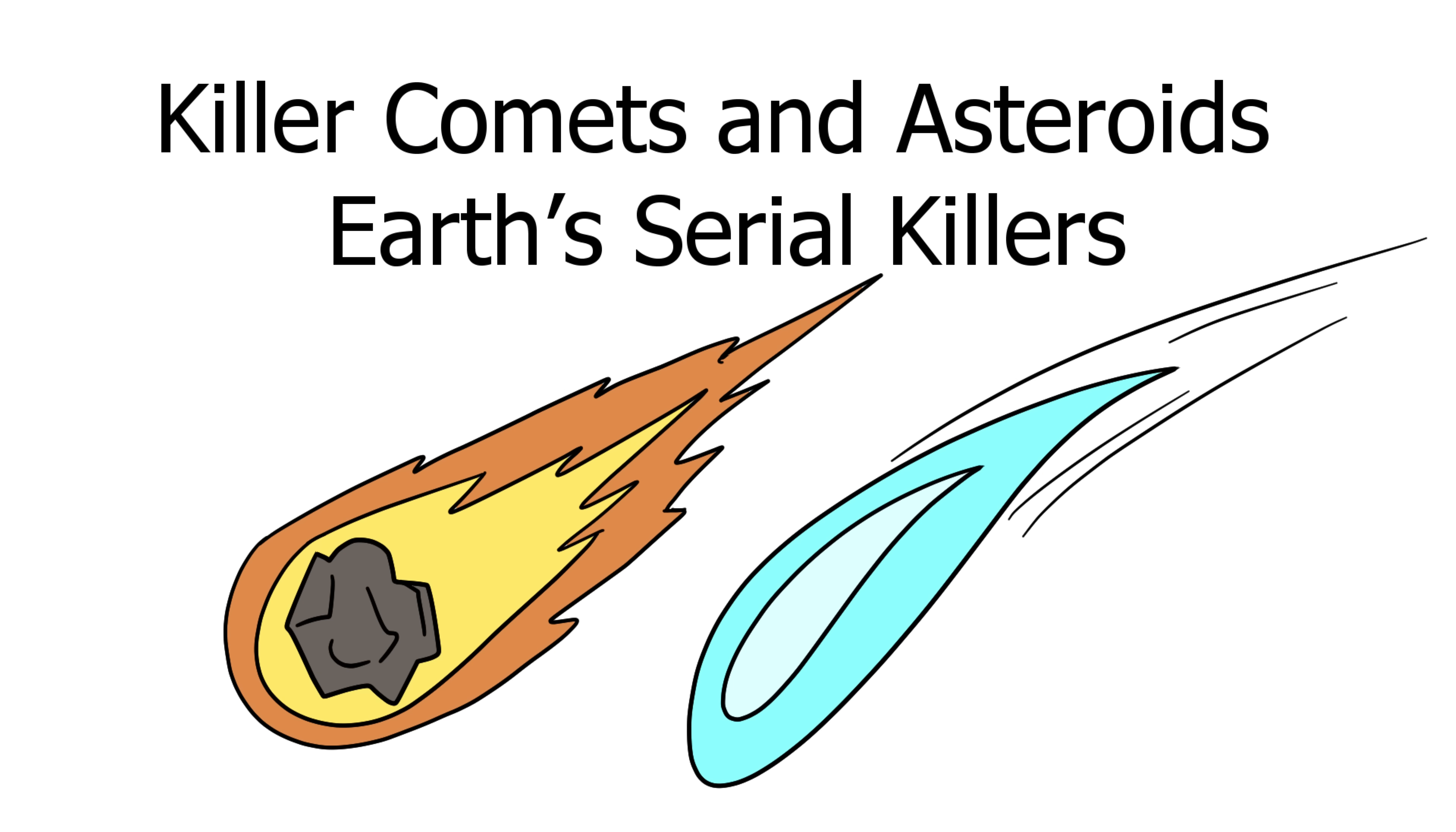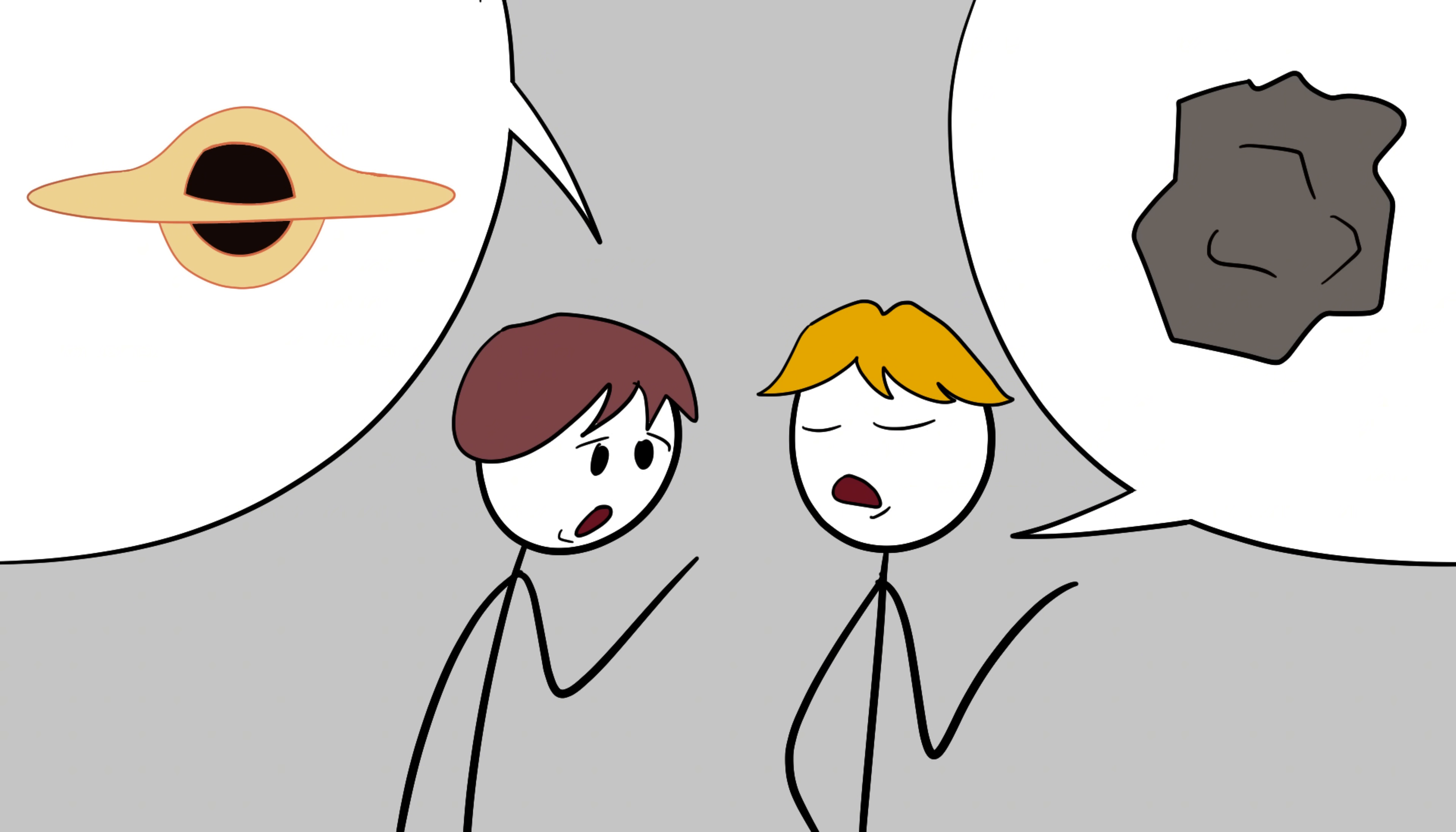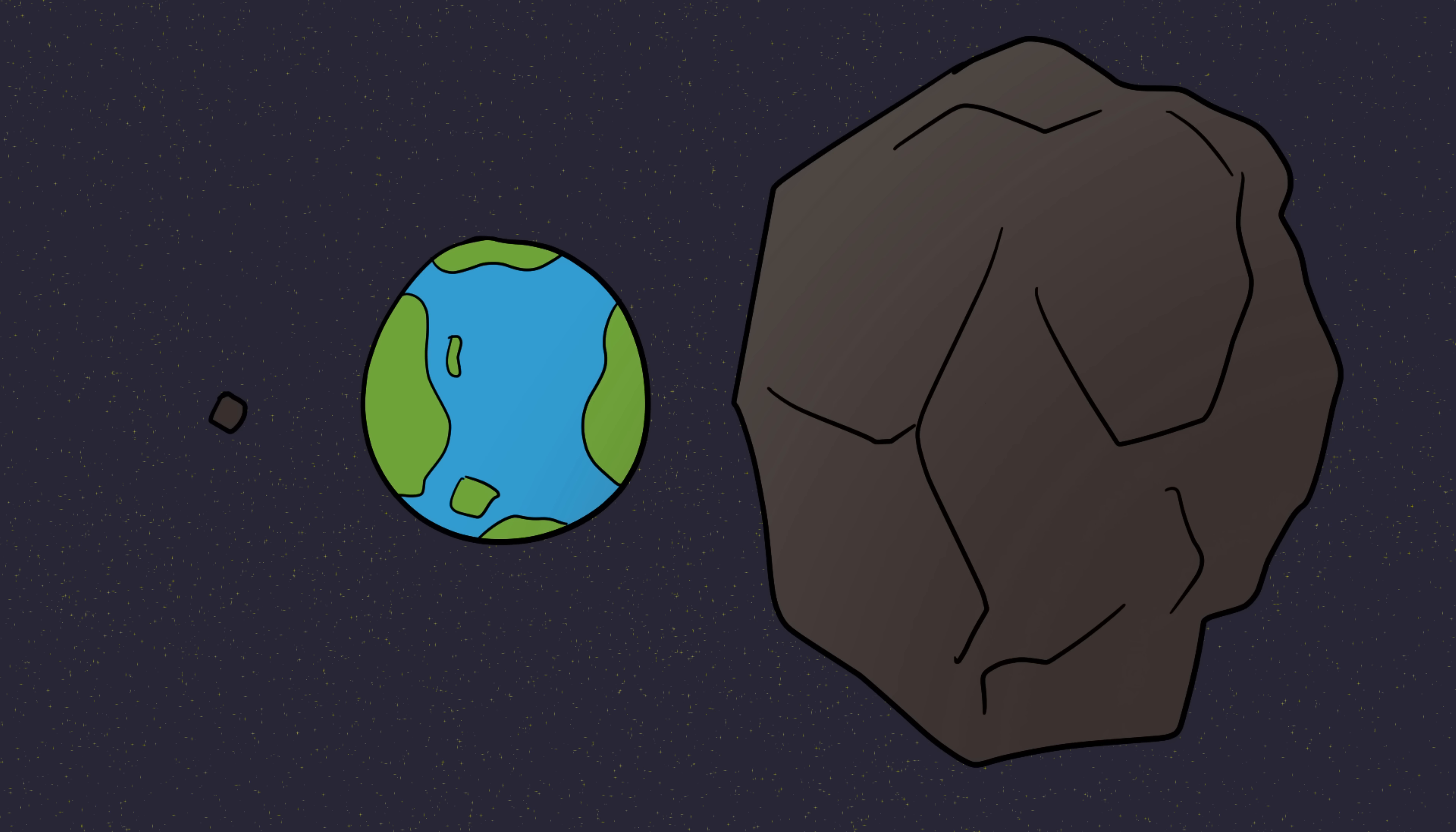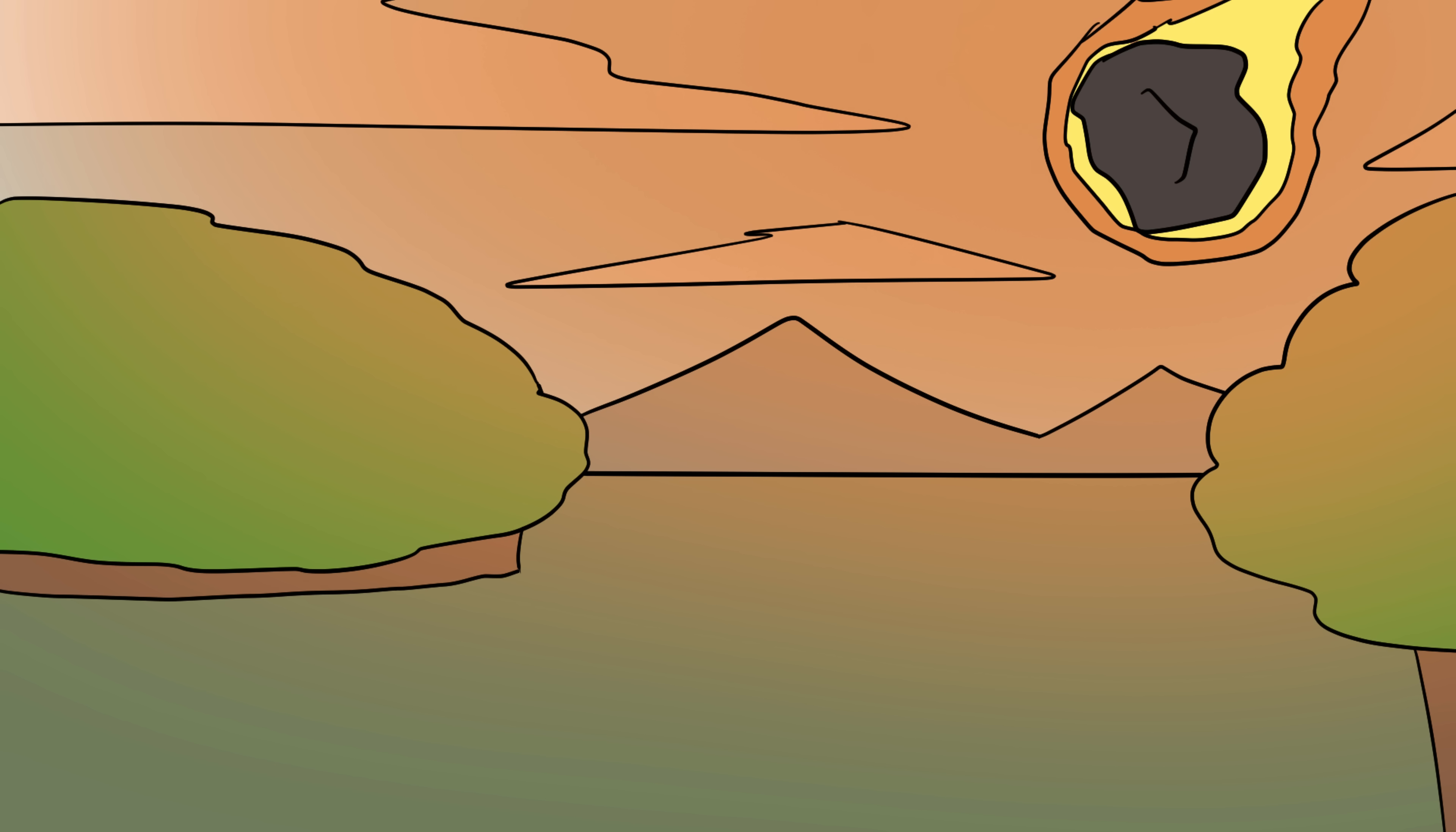Number four. Killer comets and asteroids. Earth's serial killers. Here's the thing about space. It doesn't need exotic monsters to kill us. Sometimes a good old-fashioned rock will do the job, and the universe has plenty. Millions of comets and asteroids are drifting through the solar system. Some as small as pebbles, others big enough to ruin your whole civilization. Case in point, about 66 million years ago, one of them ended the reign of the dinosaurs.